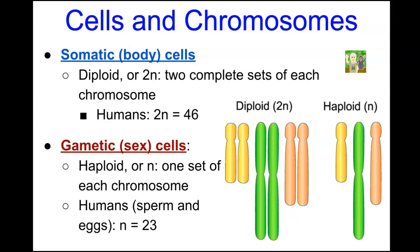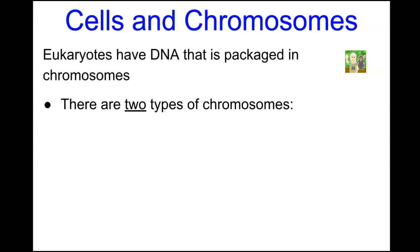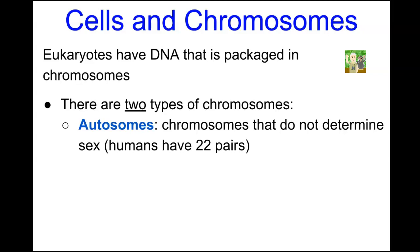For humans, sperm carry 23 chromosomes and the female ovum also carries 23 chromosomes. Eukaryotes have DNA packed in chromosomes, and there are two types: autosomal chromosomes, or autosomes, which are the chromosome pairs that do not determine sex — in humans these are pairs 1 through 22 — and the sex chromosomes, which are the X and Y chromosomes, comprising pair 23.